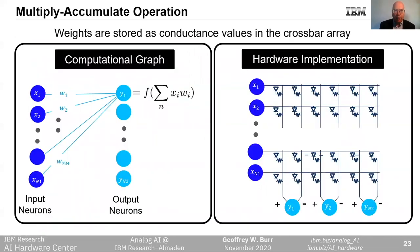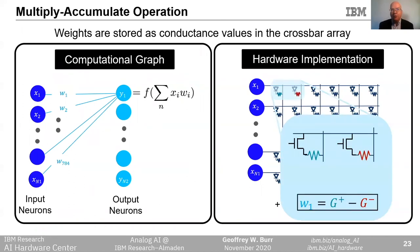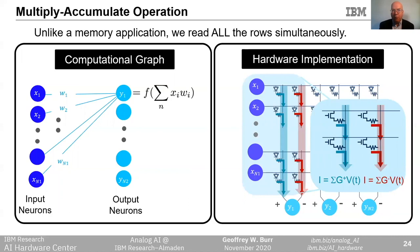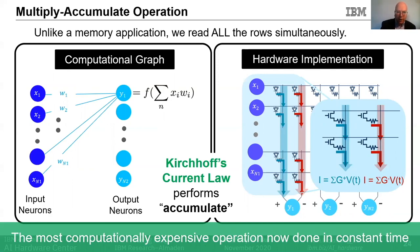Let's look at how our memory array implements the multiply-accumulate operation. We encode weights into conductance values on the array, using selectors, diodes, or transistors to access each device, and using the difference between two conductances — a conductance pair — to encode a signed weight. When the peripheral neurons encode each excitation into a voltage signal V, the act of reading the device conductance G produces a current proportional to G times V, meaning Ohm's law performs the multiplication for us. We intentionally read all the rows at the same time, each encoded with its neuron's excitation, each device doing its multiply in parallel and adding its current to the vertical bit line. This means Kirchhoff's current law performs the accumulate for us, and we have performed an entire vector-matrix multiply in parallel in constant time at the location of the weight data.